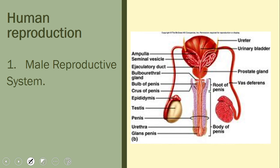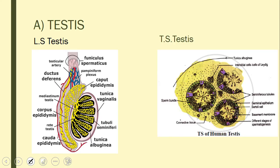There is a pair of testes located outside the body in the scrotum. Each testis is an oval structure about 4 to 5 centimeters in length and about 2 to 3 centimeters in thickness and width. We will study the testis in detail by looking at both a longitudinal section (LS) and a transverse section (TS).